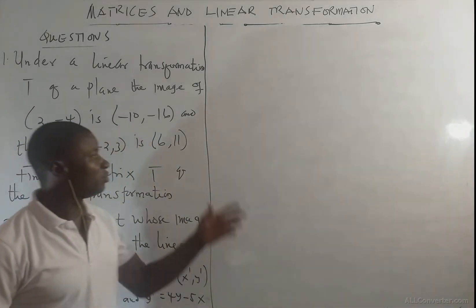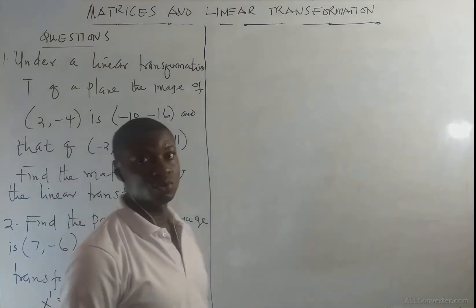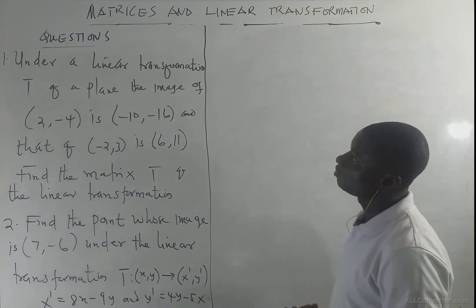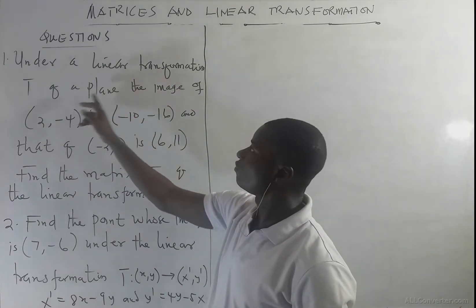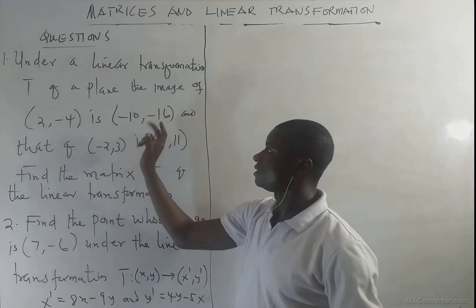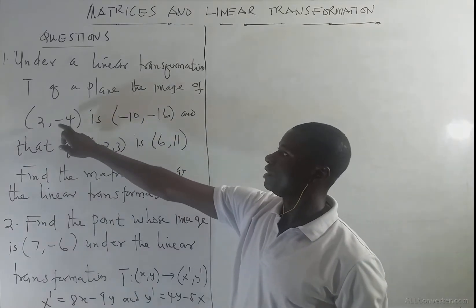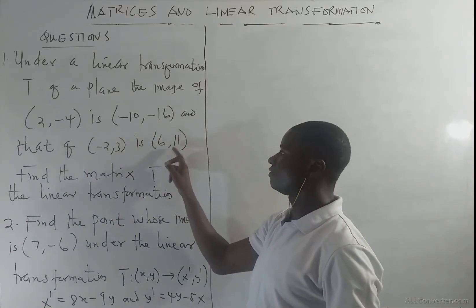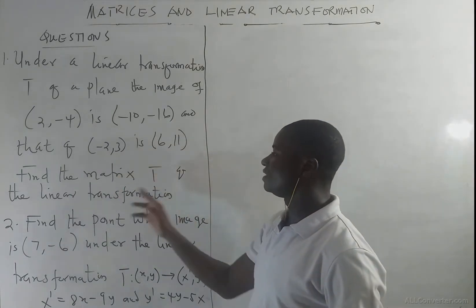Hello, welcome to Kenyaku Mathematics classroom. On this episode you are going to solve the given questions. Question one says: under a linear transformation T of a plane, the image of (2, -4) is (-10, -16), and that of (-2, 3) is (6, 11). We have to find the matrix T of the linear transformation.